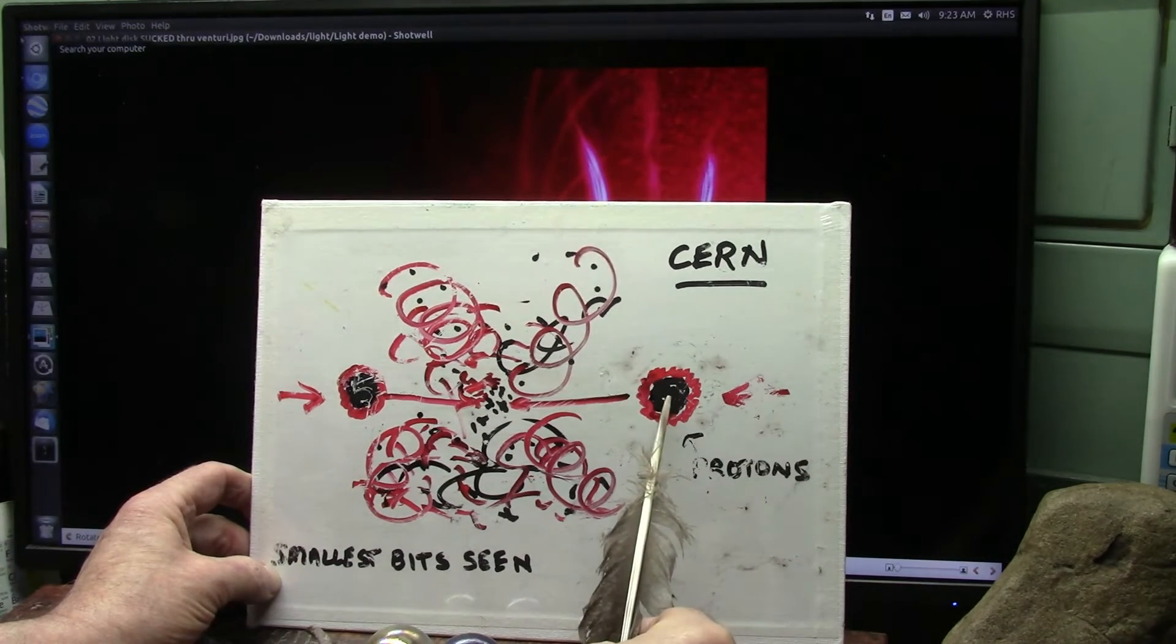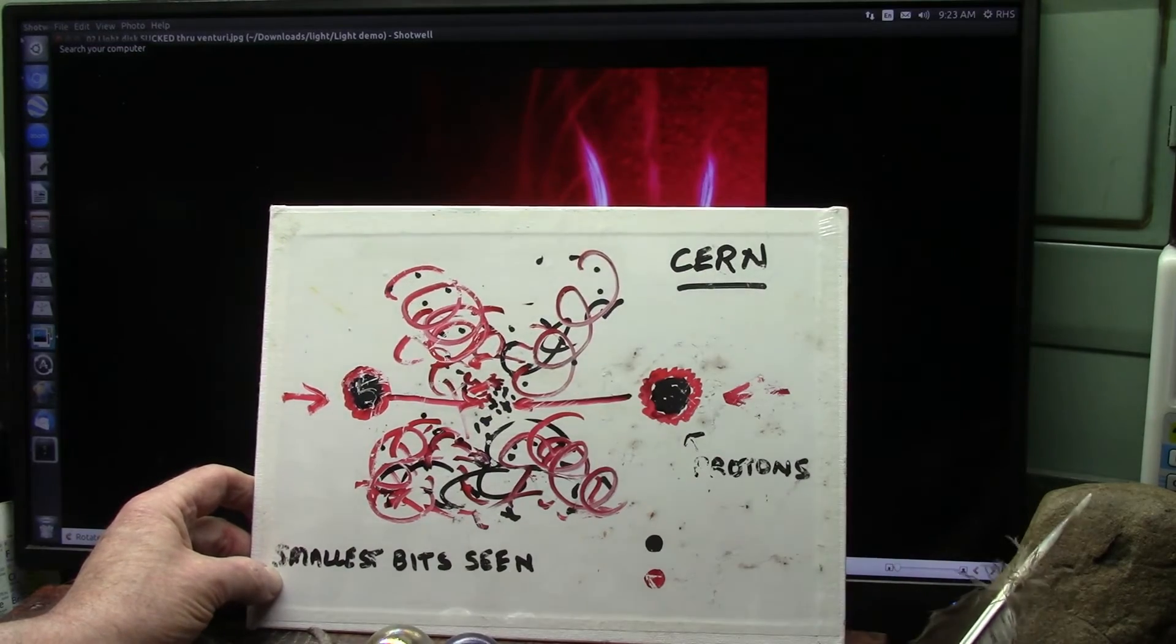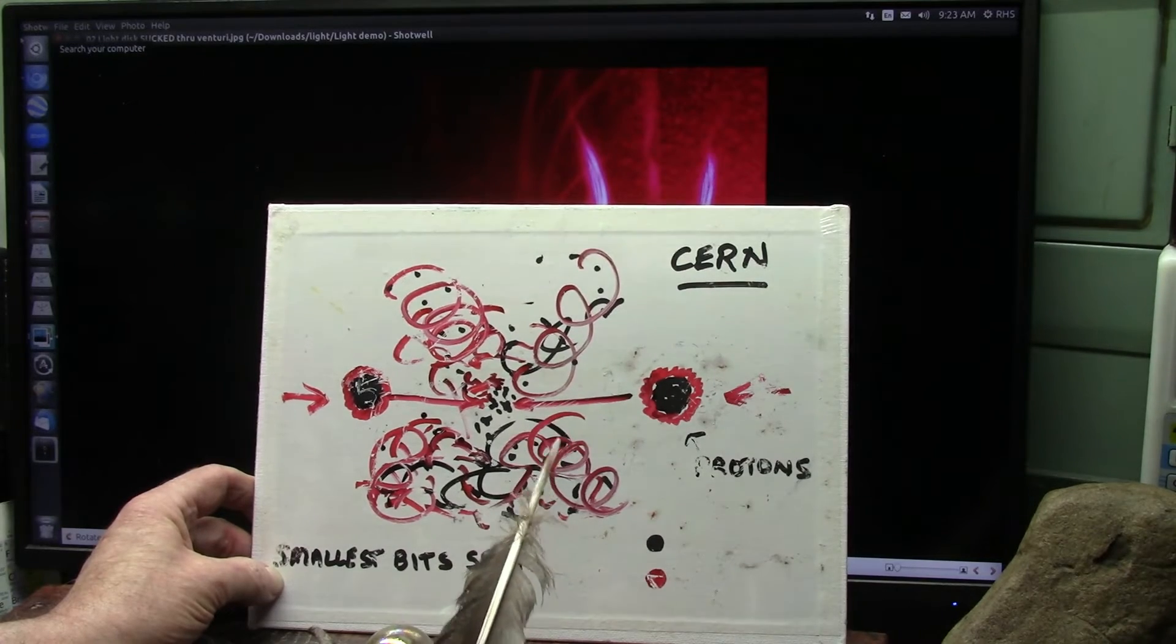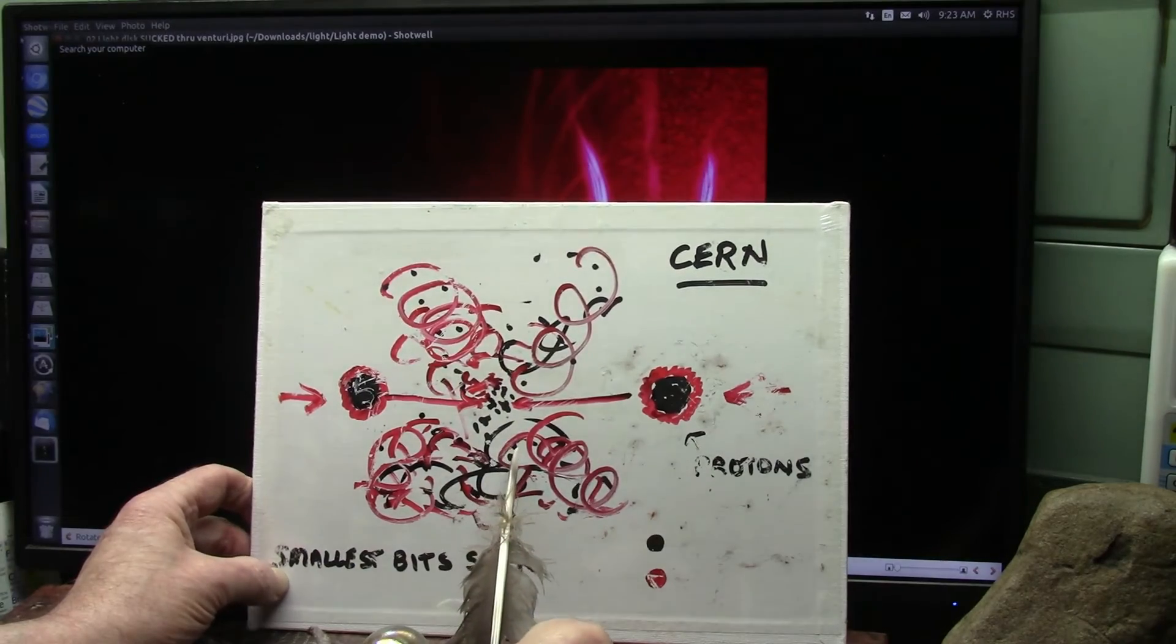But when they hit together, they see the black ones going off and the white ones. And it's just a big mess. And what they see is those two little particles, the black and the white ones. They say these are the smallest ones we can find. But we find it in a ball of trash they found.